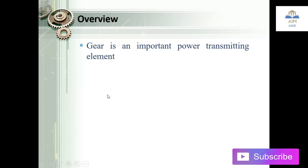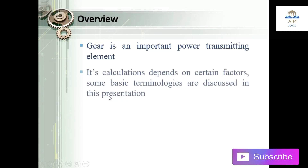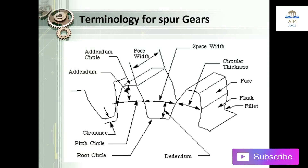First is an overview. Gear is the important power transmitting element which transfers power and motion from one point to another point. Its calculations depend upon certain factors. Some basic terminologies are discussed in this presentation. First is the terminology for spur gears. All the calculations depend upon these factors only. Spur gear is the gear which has rectangular teeth — not exactly rectangular but slightly just like that.